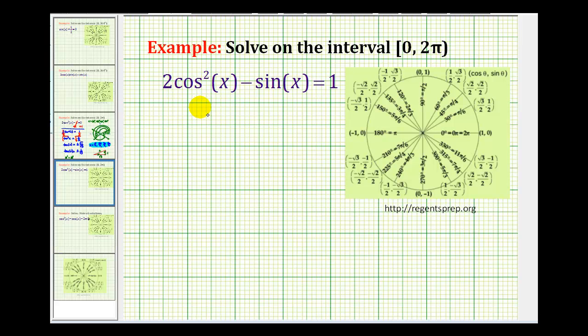This equation is more challenging than previous examples because there are two trig functions, one is squared and one's not, and none of the terms have common factors. But we can perform a substitution for cos²(x) so we can have an equation that only contains the sine function.